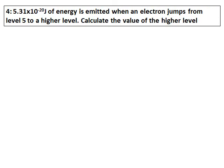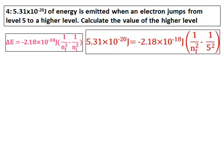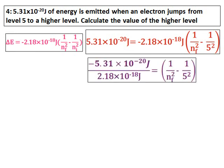5.31 times 10 to the negative 20 joules of energy is emitted when an electron jumps from level 5 to a higher level. Calculate the value of the higher level. Use the same formula. Here they have asked you to calculate the value of nf. ni is given and everything else is given. Substitute the values.